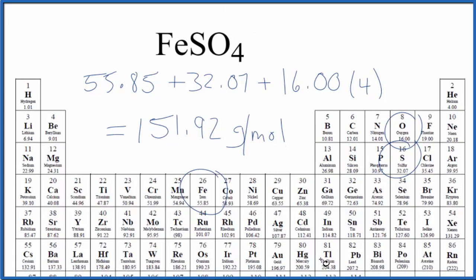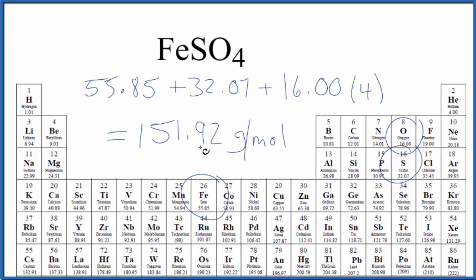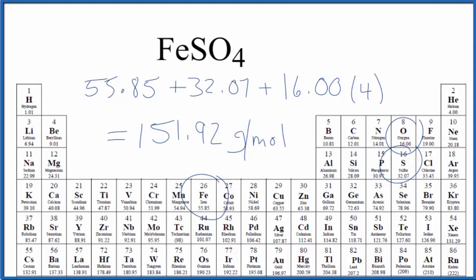Note that my periodic table rounds to two decimal places, so if your periodic table is different you might get a slightly different number here. So that's the molar mass for FeSO4, iron 2 sulfate. This is Dr. V and thanks for watching.